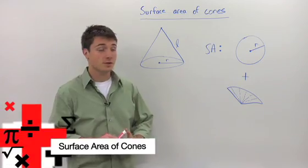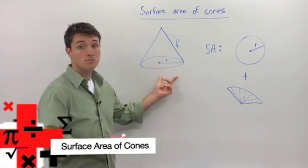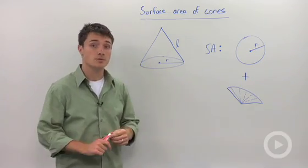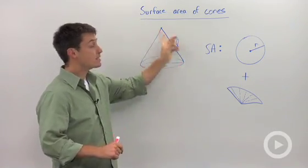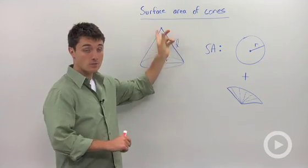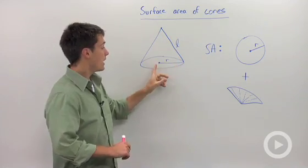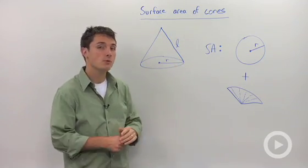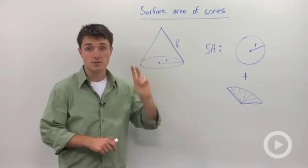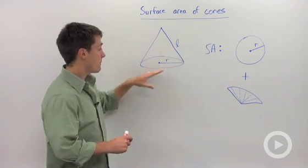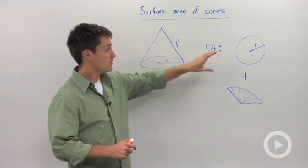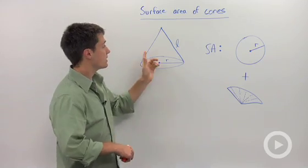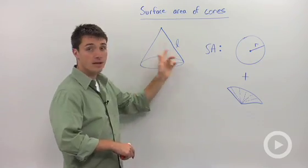If you want to calculate the surface area of a cone, you only need to know two dimensions. The first is the slant height L, and the second is the radius. So what we're going to do is separate this into two pieces: the first is the base, which is a circle with radius R, and the second is the slant height L.